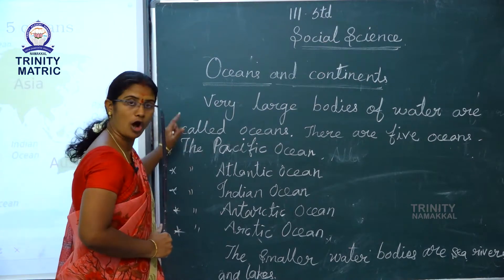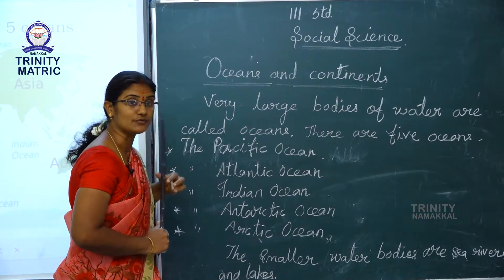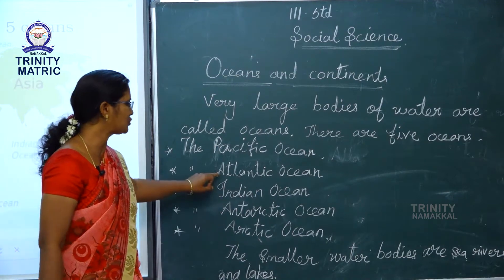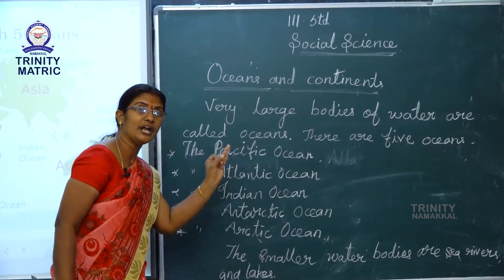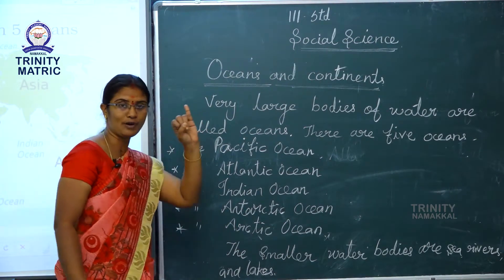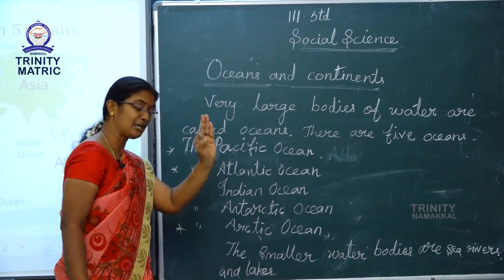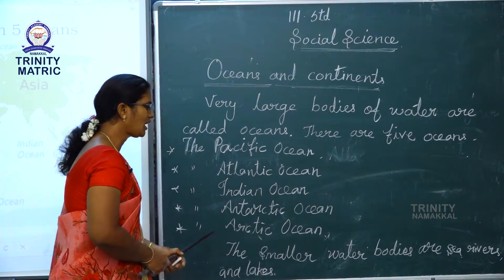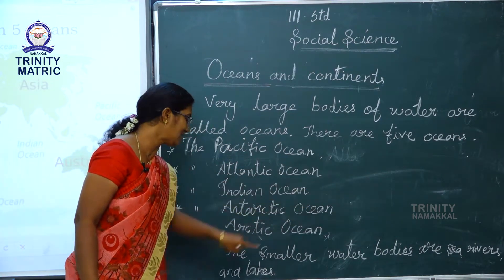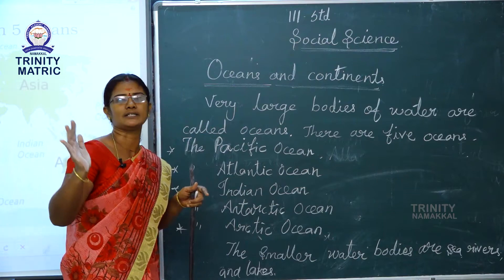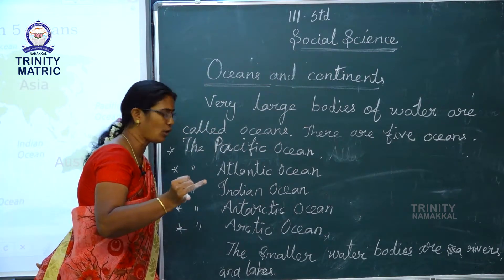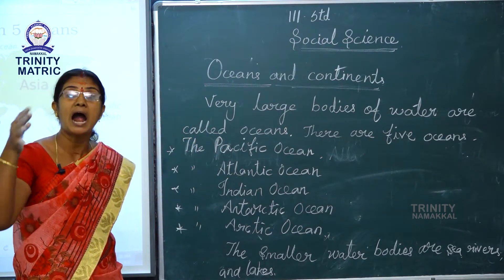Very large bodies of water are called oceans. There are five oceans: Pacific Ocean, Atlantic Ocean, Indian Ocean, Antarctic Ocean and Arctic Ocean. The smaller water bodies are seas, rivers and lakes.